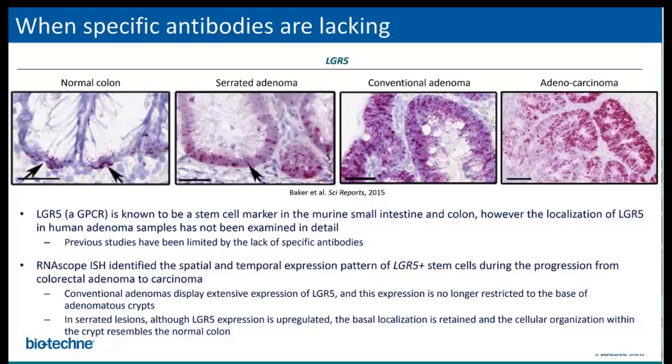LGR5 is known to be a stem cell marker in the murine small intestine and colon. However, the localization of LGR5 in human adenoma samples has not been examined in detail, and previous studies have been limited by the lack of specific antibodies. The authors approached this very systematically to understand differences in stem cell architecture in human normal colon, adenomas of different histological subtypes, and adenocarcinoma of all stages.